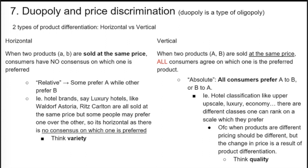Now slowing down for new content: duopoly and price discrimination. A duopoly is a type of oligopoly. There are two types of product differentiation — horizontal and vertical. Horizontal differentiation: two products A and B are sold at the same price, but consumers have no consensus on which is preferred — some prefer A, others prefer B. For example, the Waldorf Astoria and the Ritz Carlton sold at the same price — some prefer one due to personal connection, others for loyalty points. There's no consensus on which is best, so it's about variety and relative preference.